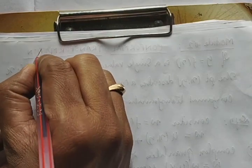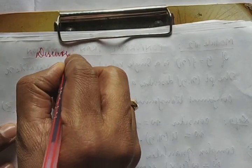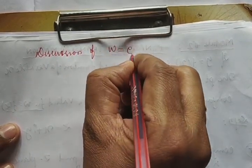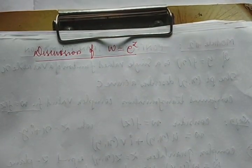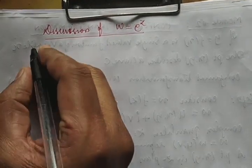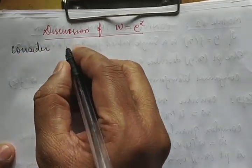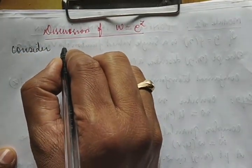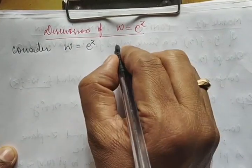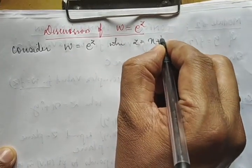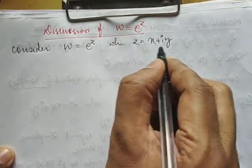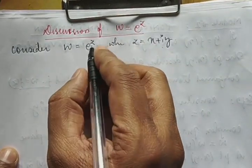Now let us apply this to a specific function. We take ω = e^z and check whether this function is conformal or not. We substitute z = x + iy into the function.